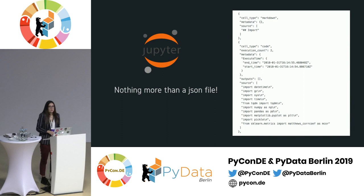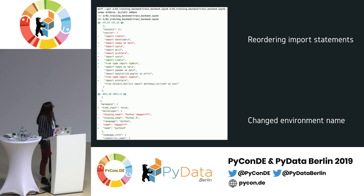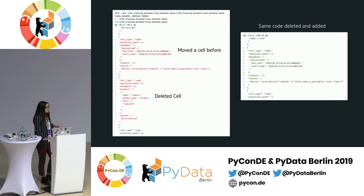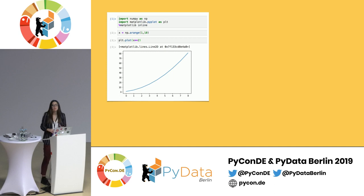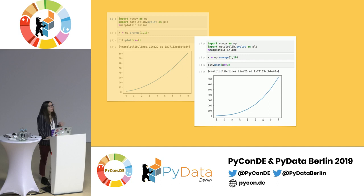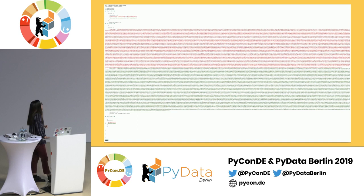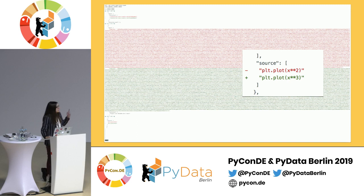What happens if you change the order of the imports in a source code cell and change the name of the executing environment? Well, the diff is still understandable. But what happens when you try to change the order of two cells and delete another one? The result is that the same code is added and deleted. For example, with an array of numbers from 1 to 9, if we change from plotting the square to the third power, the only useful information is contained in two lines. What a mess.